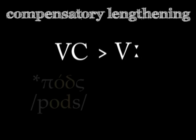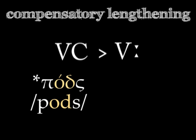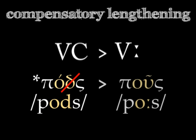The Proto-Greek word 'podts', meaning 'foot', eventually lost its D, but ancient Greek speakers lengthened the vowel O to compensate for that loss, so their word for foot was 'poos', not just 'pos'.